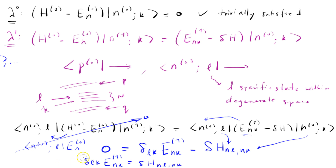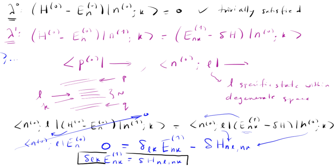And this is a really important result that will be the focus of our next video. Since there's a Kronecker delta here, this is going to mean that our perturbation δH has to be diagonal in the degenerate subspace. We'll get into that next video. Thank you, we'll be right back.